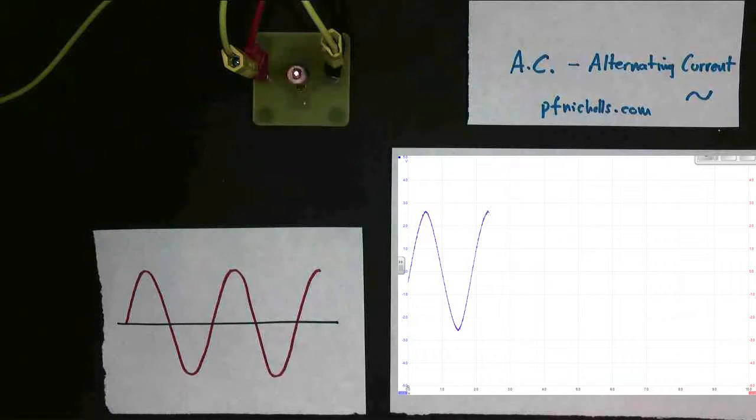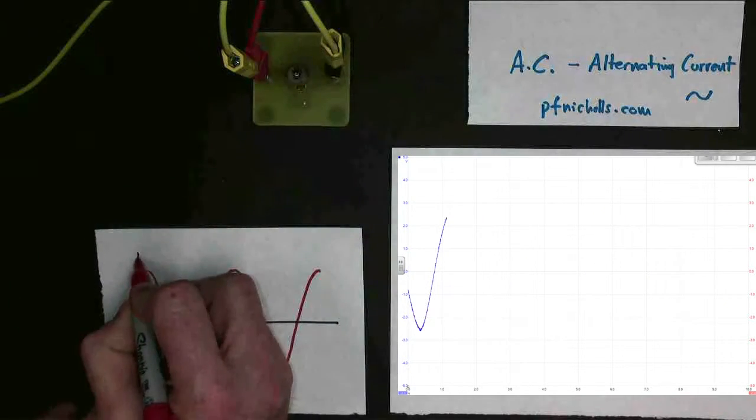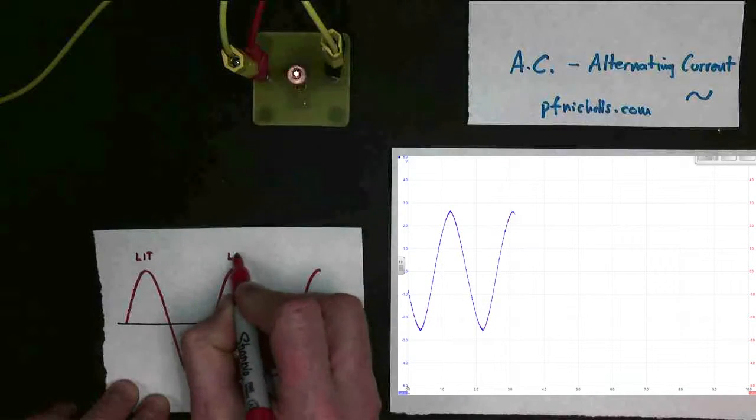You may notice that the power supply is going to a maximum only half as many times as the bulb is lighting up. That's because the bulb is lit here, and it's lit here, and it's lit here.